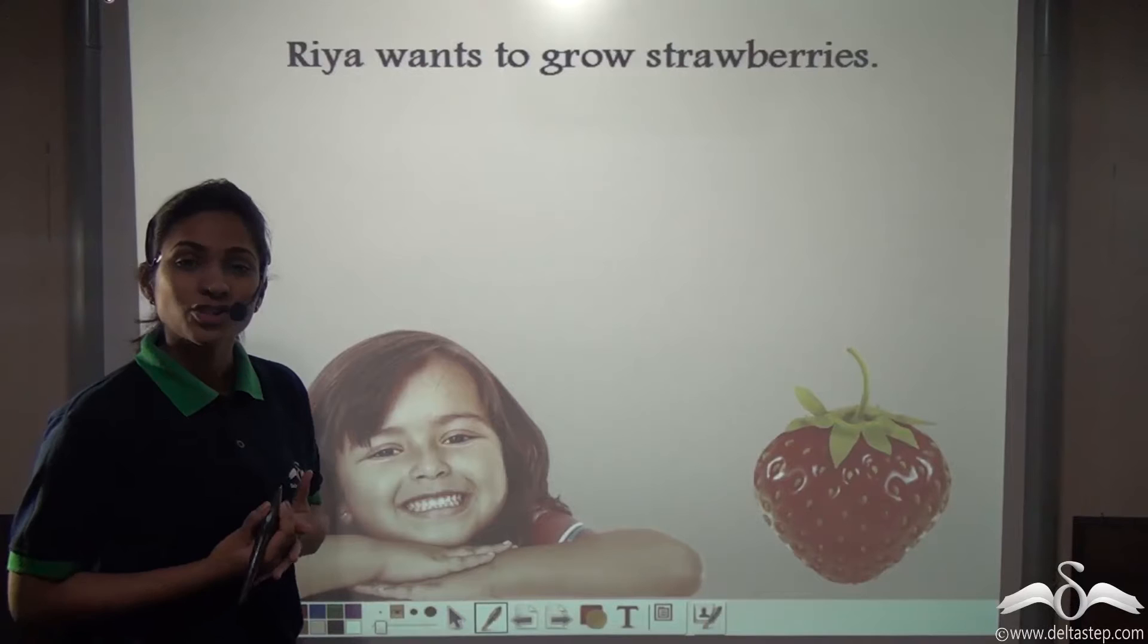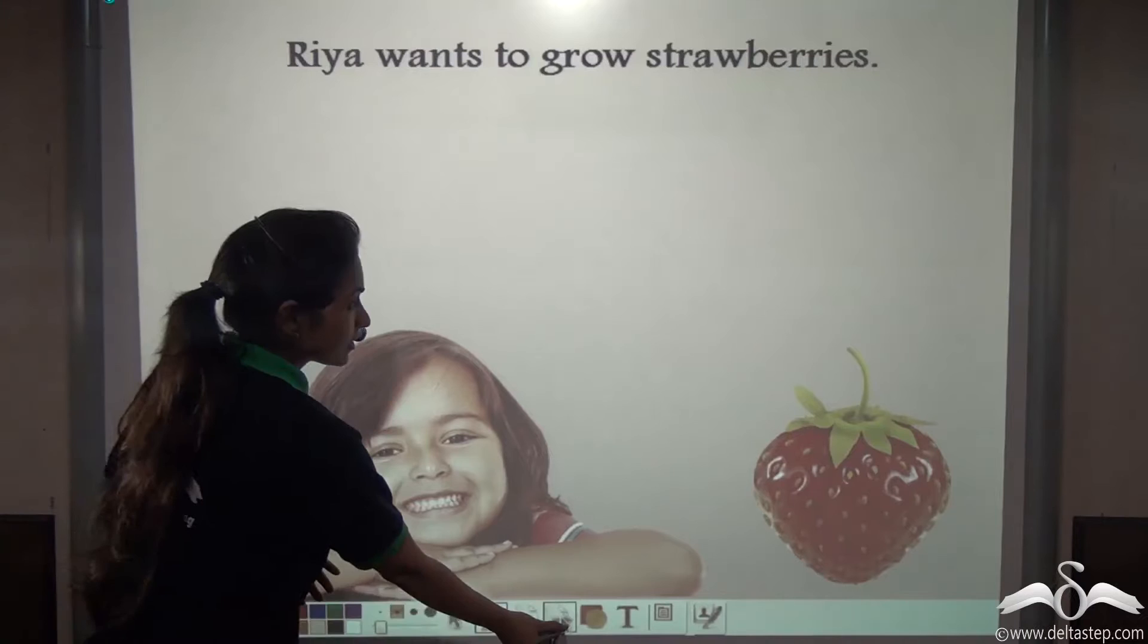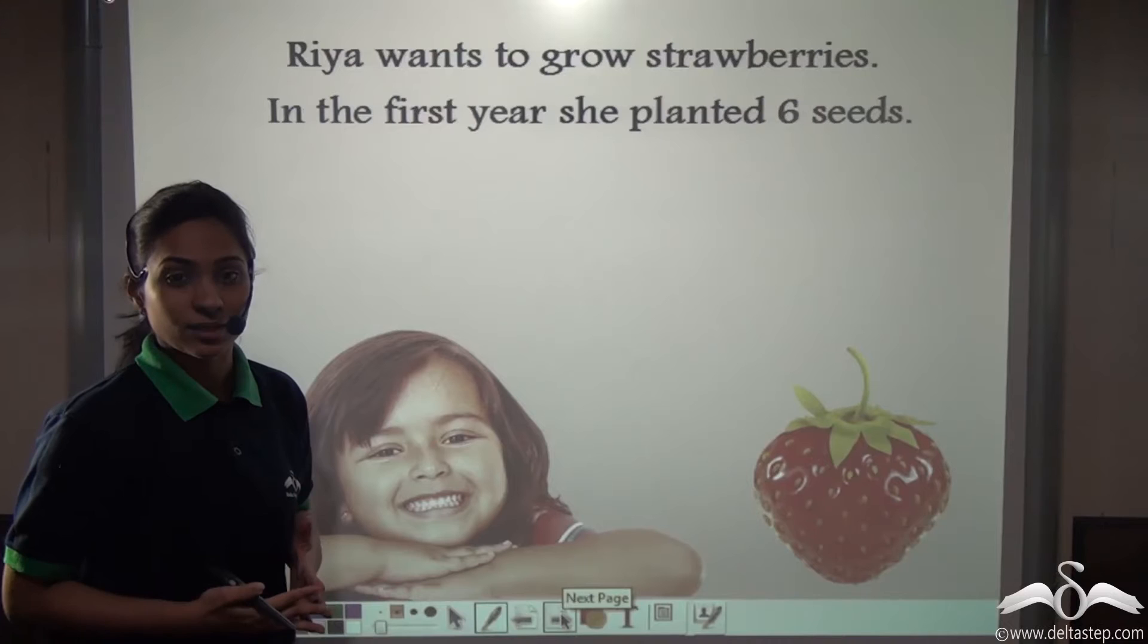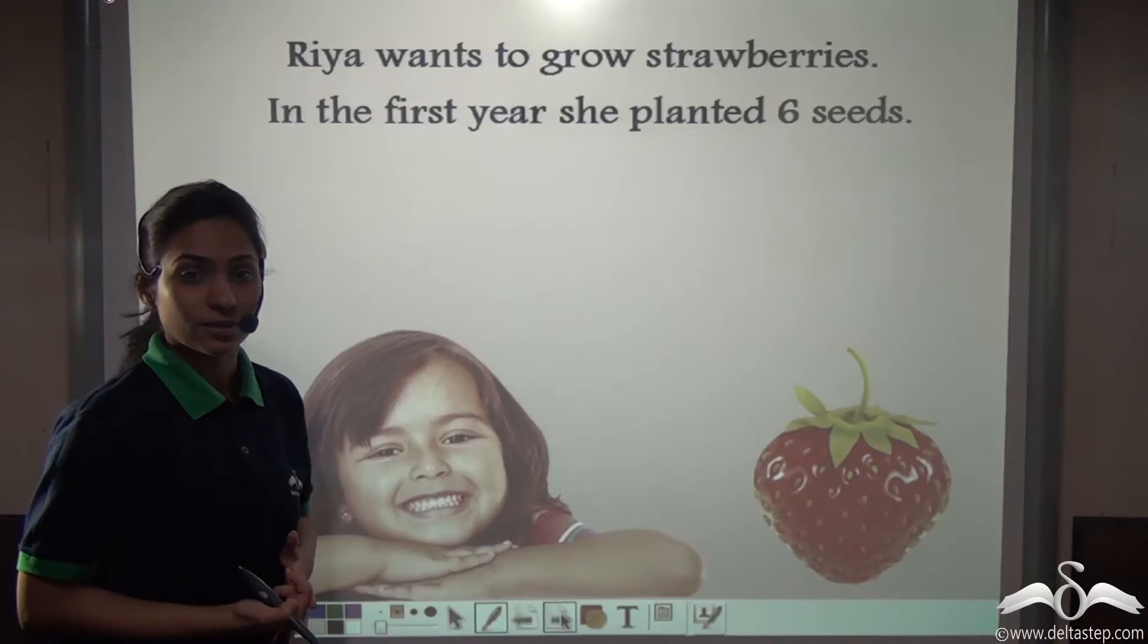Riya wants to grow strawberries. She will plant strawberry seeds. She planted 6 strawberry seeds in the first year. Now there were really good strawberries grown after that. So she was very excited for the second year. She tripled the number of seeds planted in the second year.